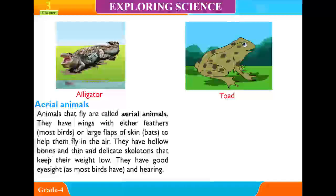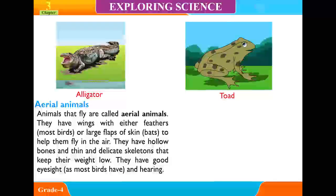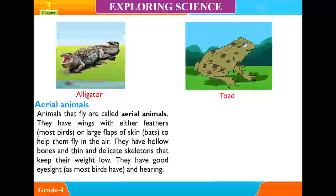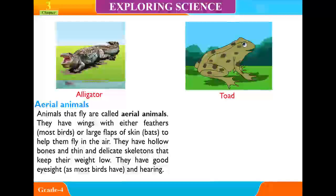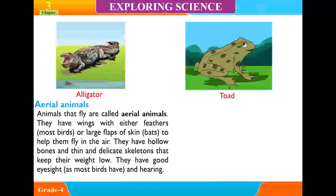Aerial animals. Animals that fly are called aerial animals. They have wings with either feathers, like most birds, or large flaps of skin, like bats, to help them fly in the air. They have hollow bones and thin and delicate skeletons that keep their weight low. They have good eyesight and hearing.